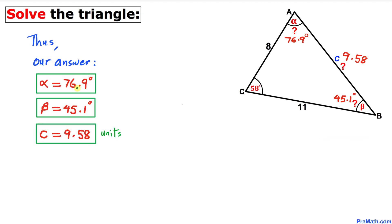So our complete answer is: angle alpha = 76.9°, angle beta = 45.1°, and side c = 9.58 units, found using the law of cosines and the law of sines. That's our final answer. Thanks for watching, and please don't forget to subscribe to my channel for more exciting videos. Bye!